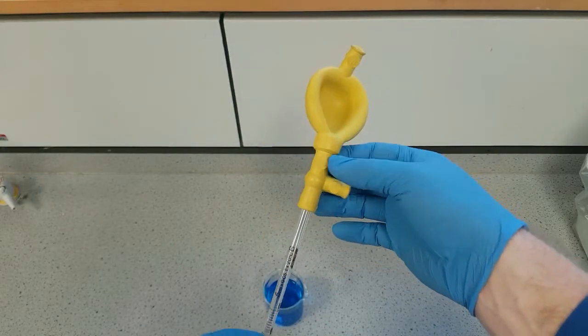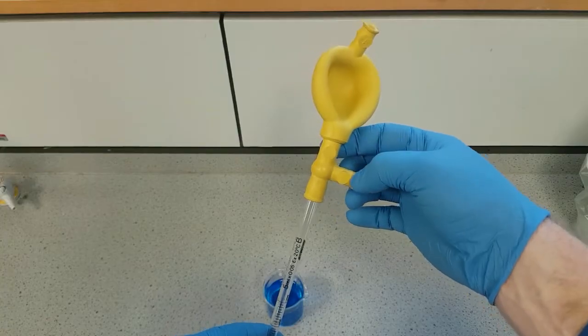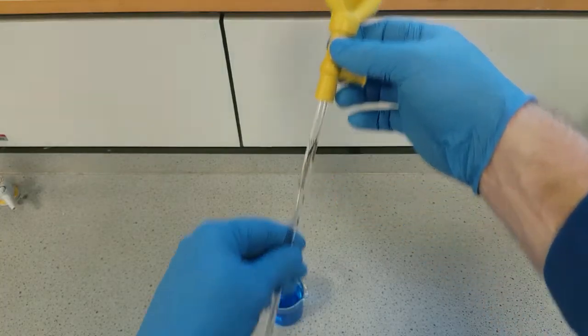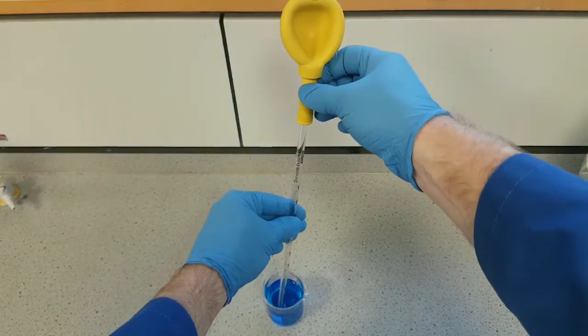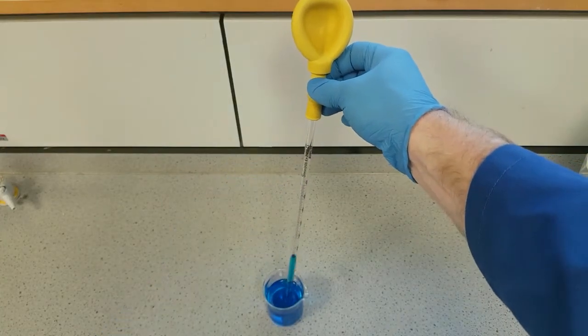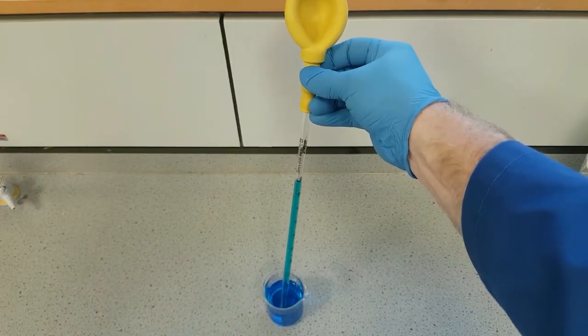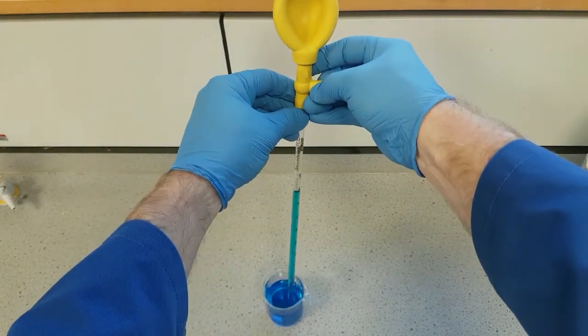Now we're ready to draw up liquid, so we'll press the S valve first and then to dispense we'll press the E valve. So that's S to draw up, E to expel. Let's have a look at that. S and then E, S and then E.